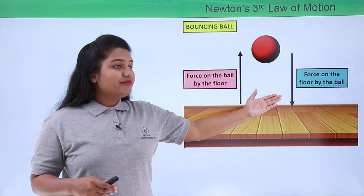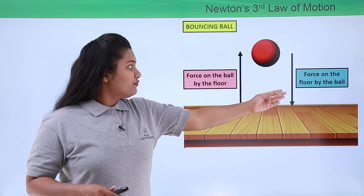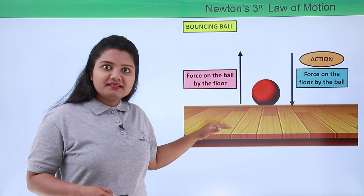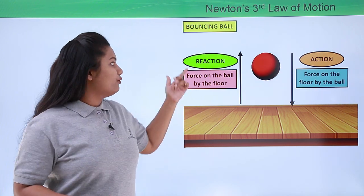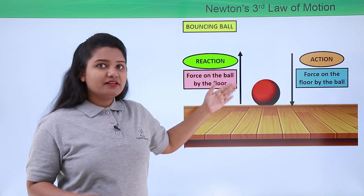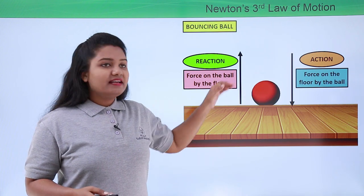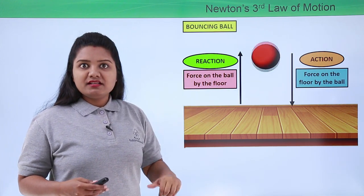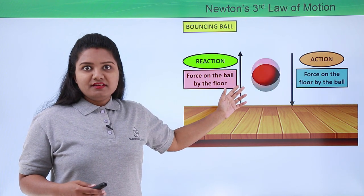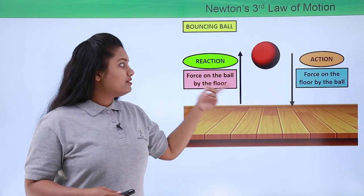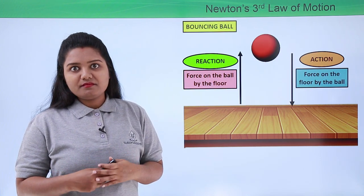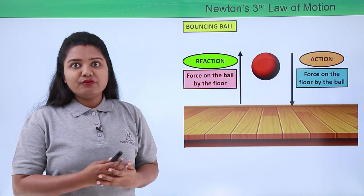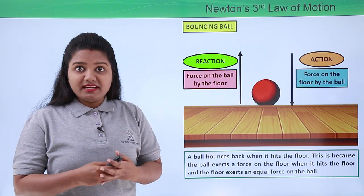Here we have a pair of forces. The force which the ball exerts onto the ground is the force of action, and the force which the floor exerts onto the ball is the force of reaction. These two forces act on two different objects — the force of action acts on the floor while the force of reaction acts on the ball. These two equal forces act on two different objects and are equal in magnitude and opposite in direction.